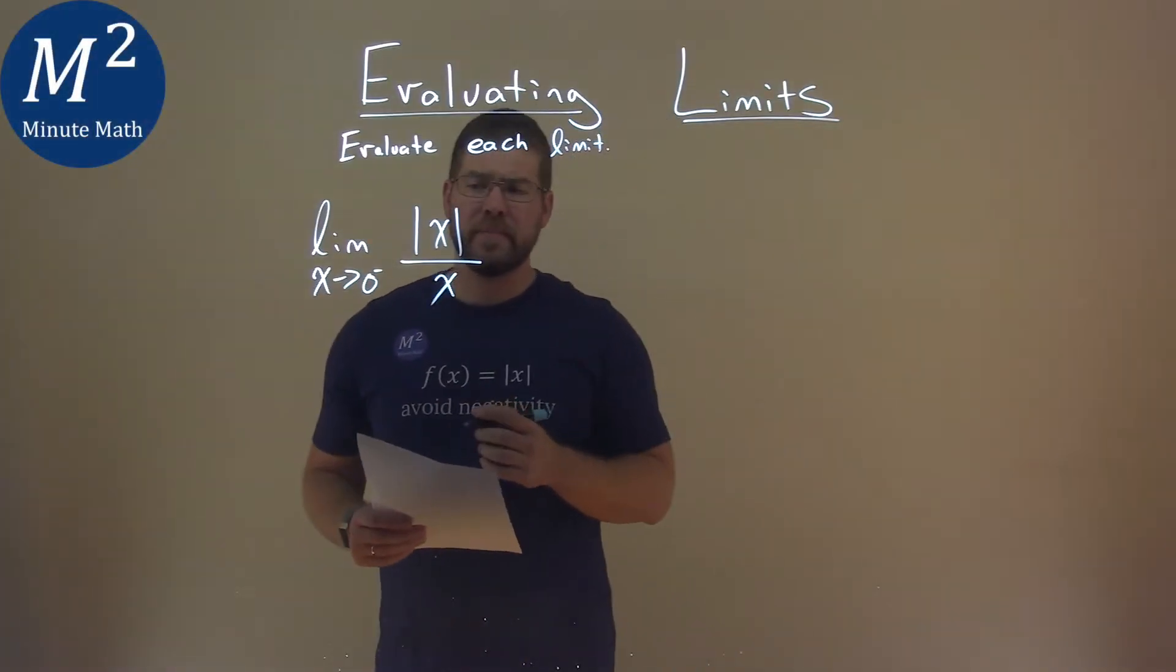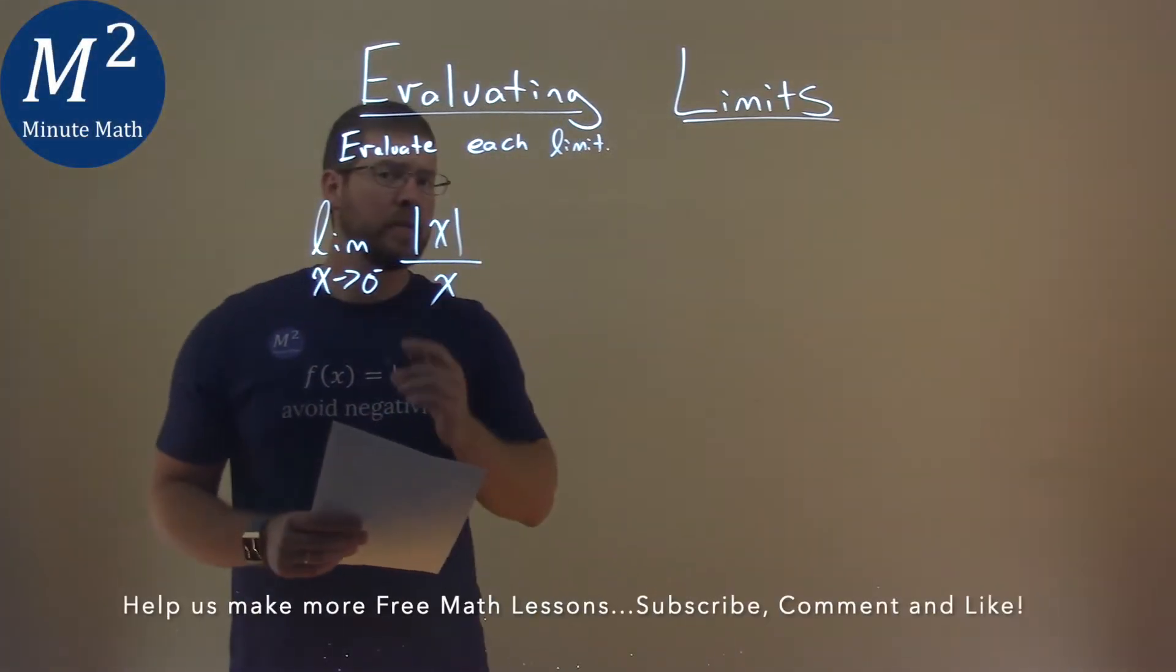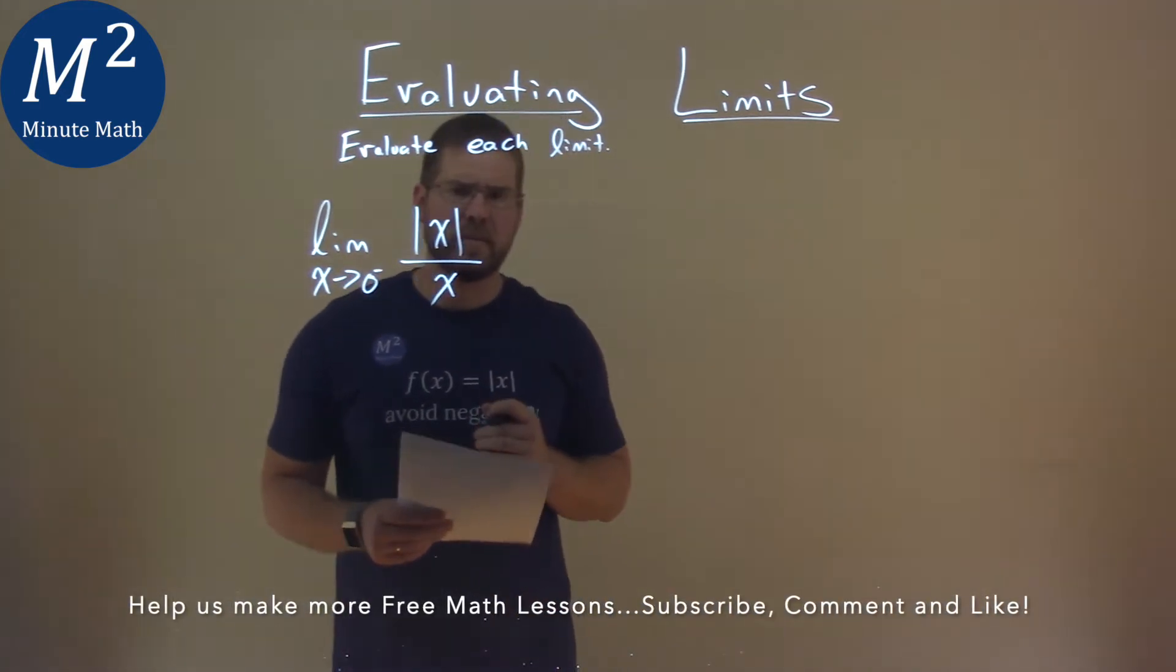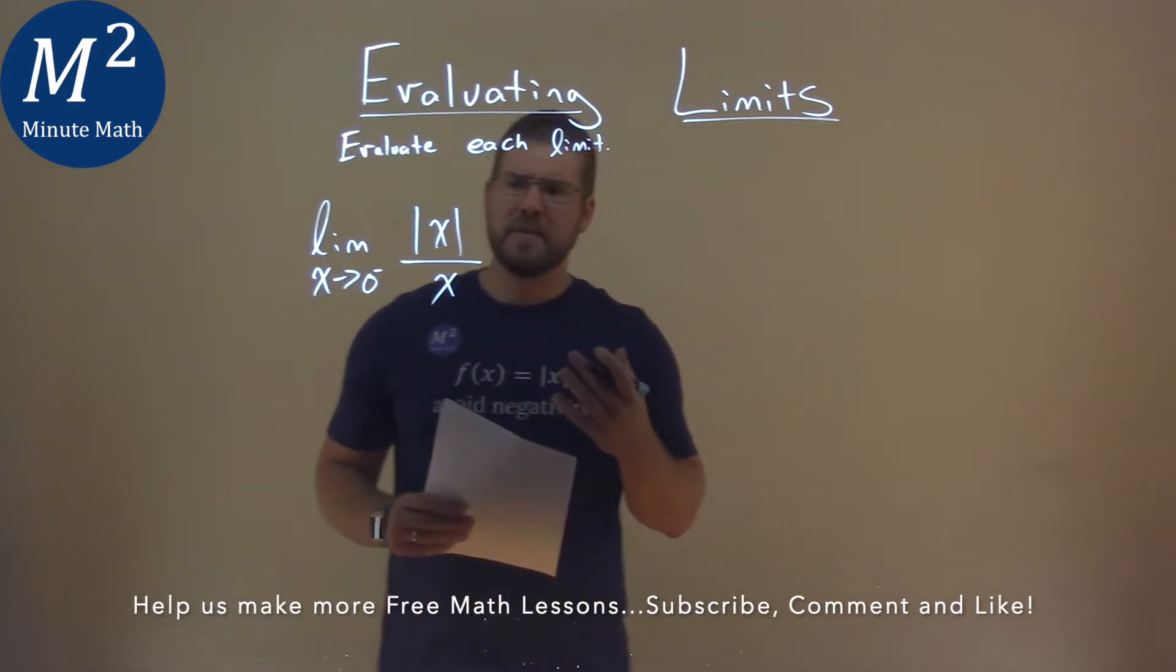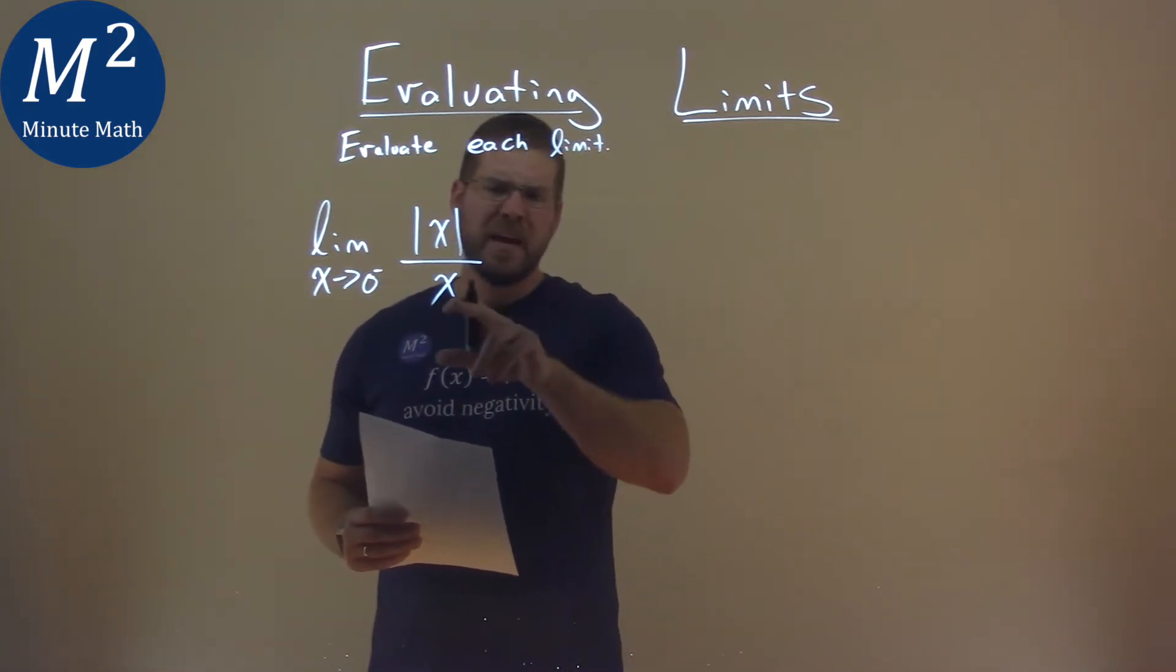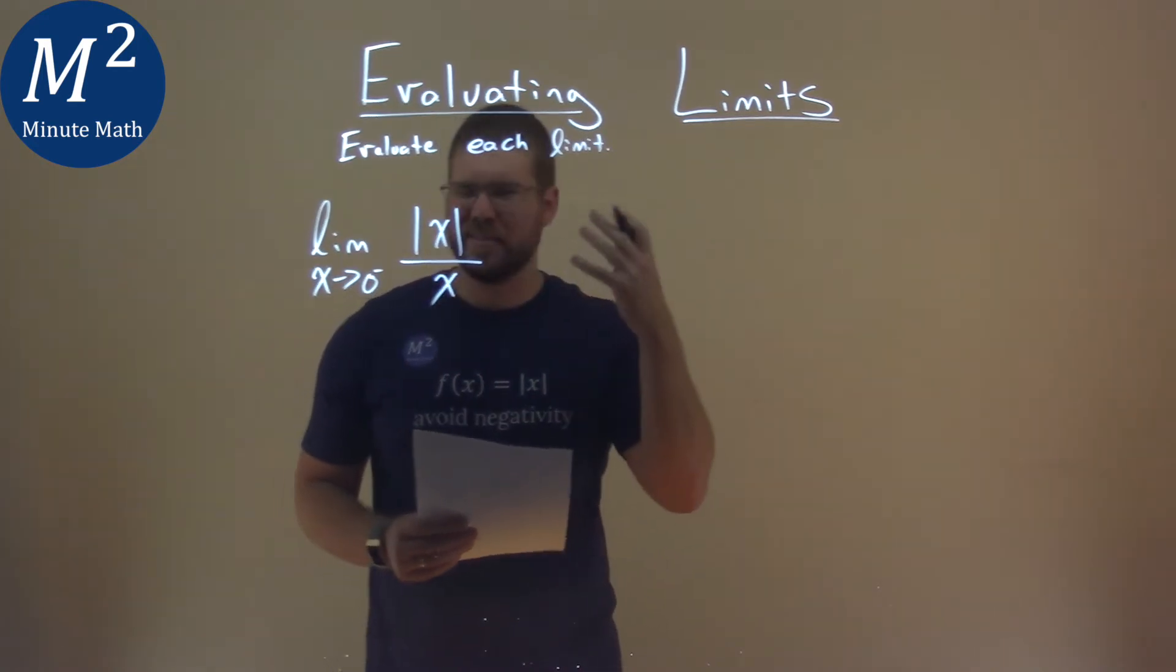We're given this limit right here, the limit as x approaches 0 from the left of the absolute value of x over x, and we need to evaluate this limit. Now this one's a little tricky, and I'm going to use a table here to try to see what's going on, what's happening at 0, right? Because really, we can't plug 0 into this equation.